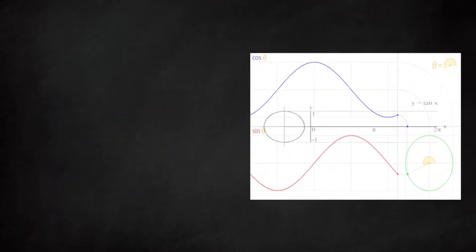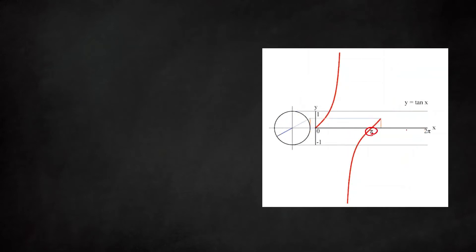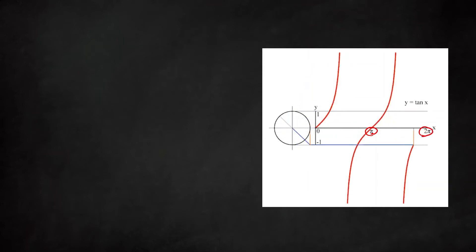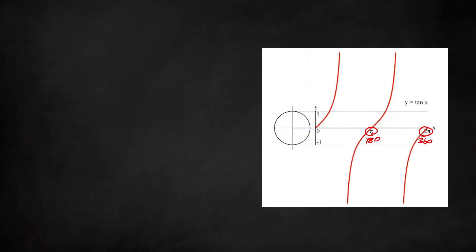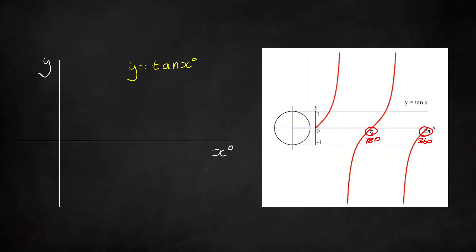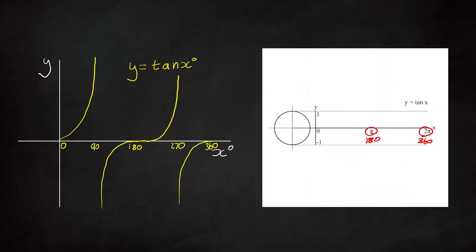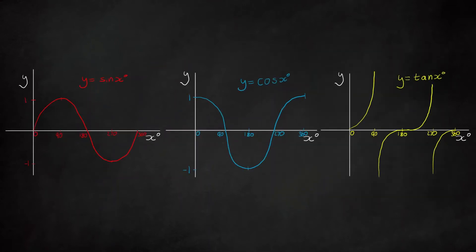Now we'll go on to the tan graph. We get it from a slightly different animation, but remember we covered it on GeoGebra — it's defined as the height of the tangent to the circle. Don't worry too much about the fact this is in pi and 2 pi — it's in radians, which is just a different way of measuring angle you'll cover next year. Basically this is 180 and this is 360. We don't include amplitude for tan this time because it actually shoots up to infinity. We'll plot from 0 to 360 as before.